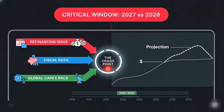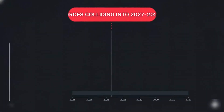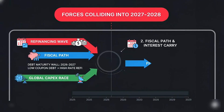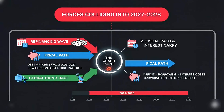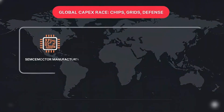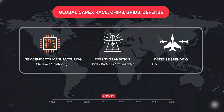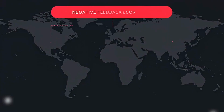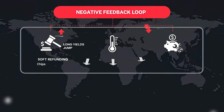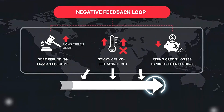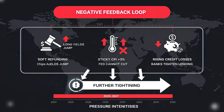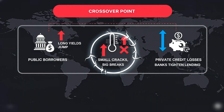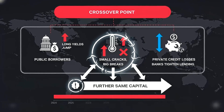Watch what happens next. Three forces collide into the window. First, the refinancing wave into 2026 and 2027. Second, the fiscal path and interest carry into 2027 budgets. Third, the global capex race in chips, grids, and defence. None yield quietly. Follow the money, find the pressure. The mechanism is simple: if refunding comes soft, long yields jump. If CPI runs sticky, the Fed cannot cut fast. If private credit losses rise, banks tighten further. The crossover point lands when public and private borrowers both reach for the same dollars at once. That's when small cracks become big breaks.